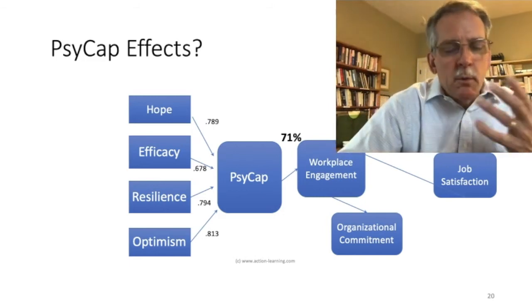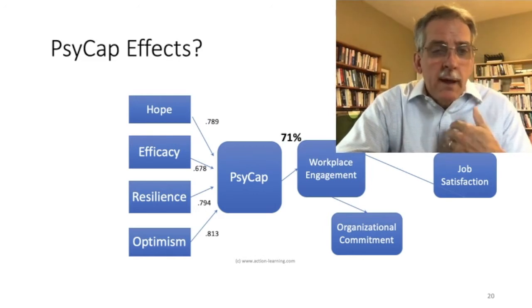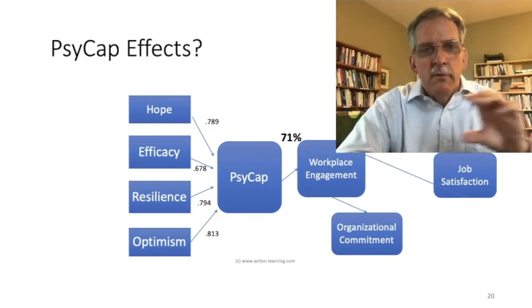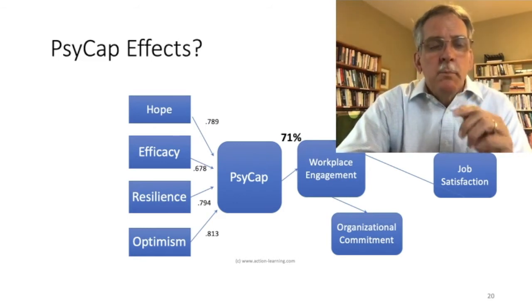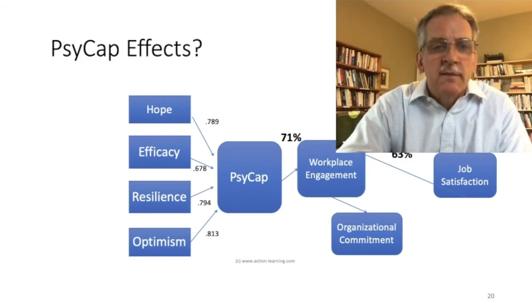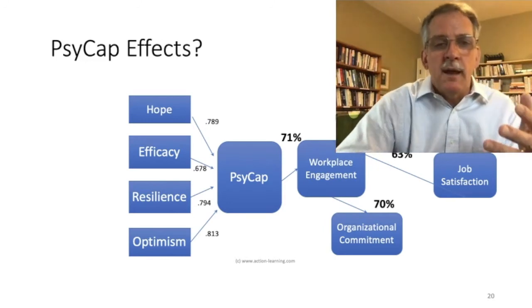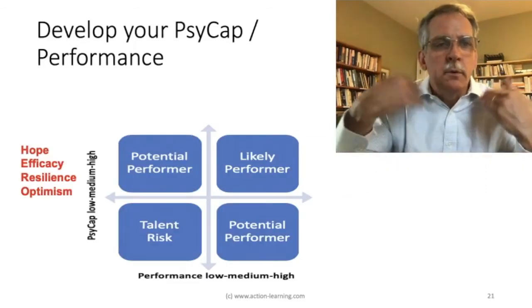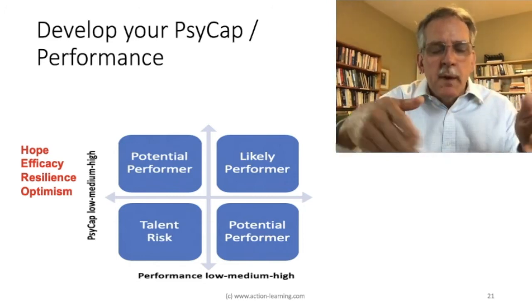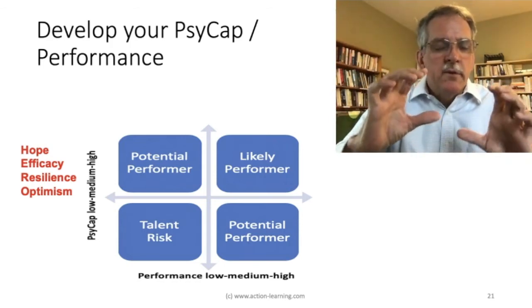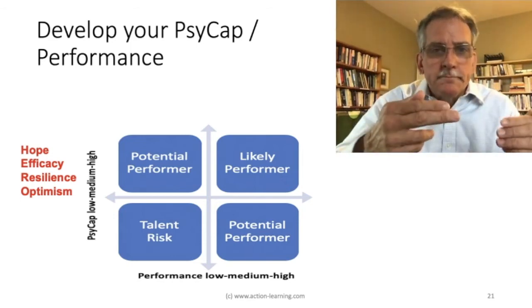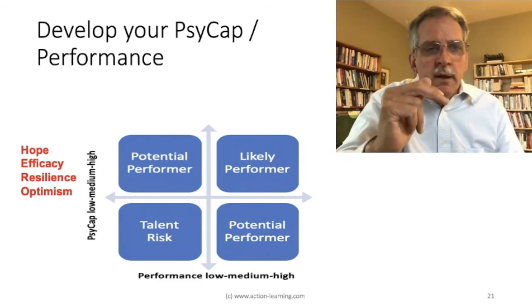Some people might be thinking about workplace employee engagement scores. But few know what Fred Luthans and others have validated in research: that employee engagement scores, even though they're at 30% over decades, are higher when people feel they've got hope, efficacy, resilience, and optimism — it could be as high as 71%. Job satisfaction scores could be as high as 63%, and organizational commitment — people's capacity to stay — around 70%. Why don't we talk about these things? I think it's because we're distracted, and we don't hire or reward for hope, efficacy, resiliency, and optimism. A two-by-two matrix is more than adequate — anybody who's a talent risk on the lower left should either be taught about PsyCAP or let go.